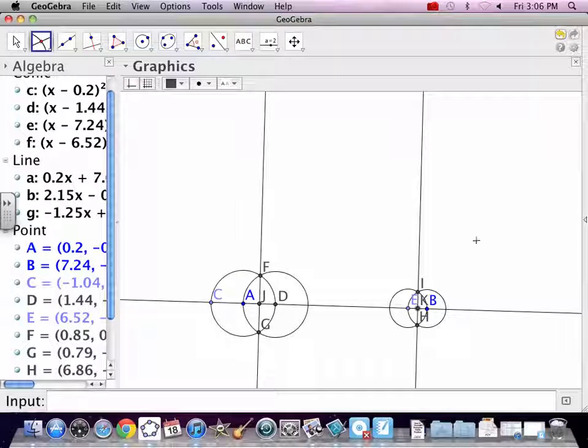So now we need to make another right angle up here somewhere. It can be anywhere. So we go back to circles.